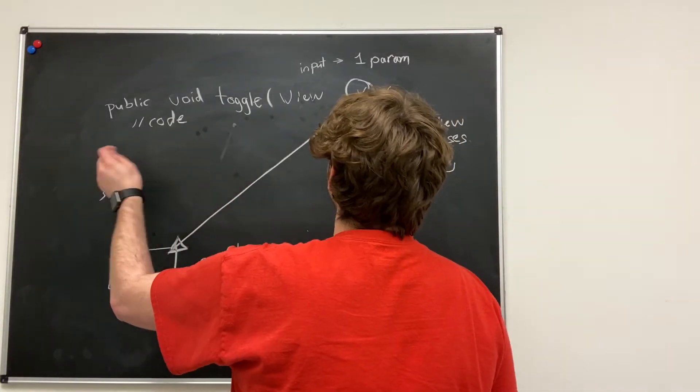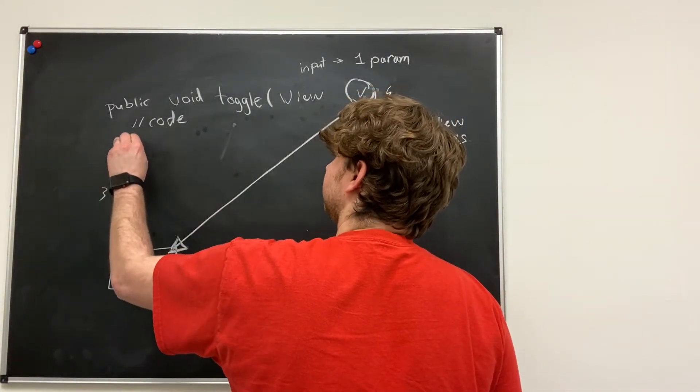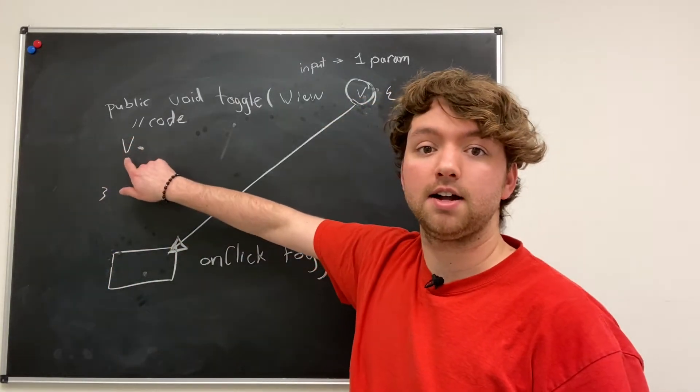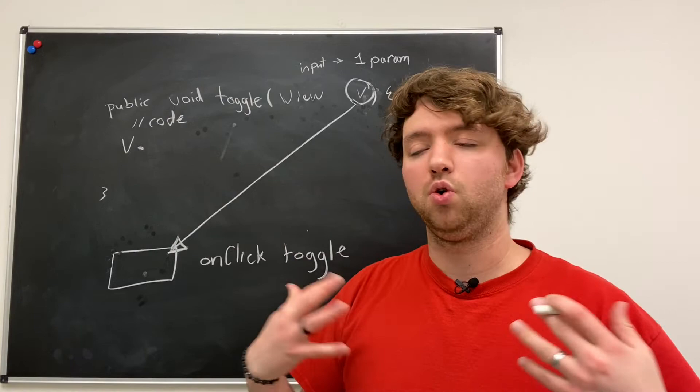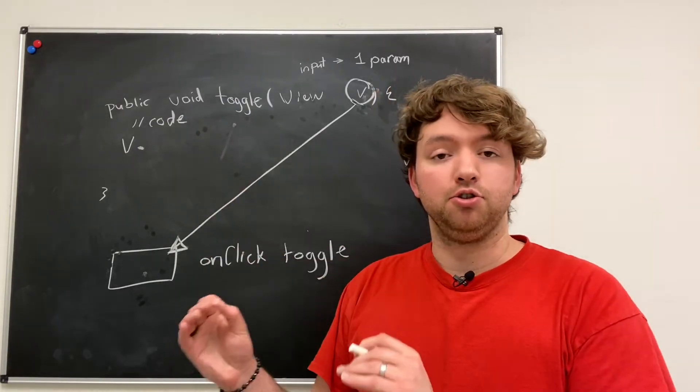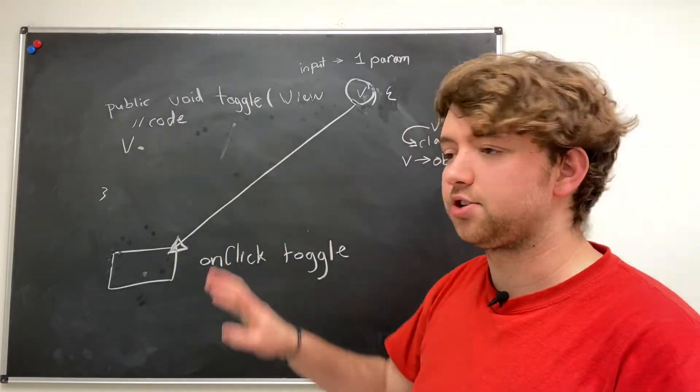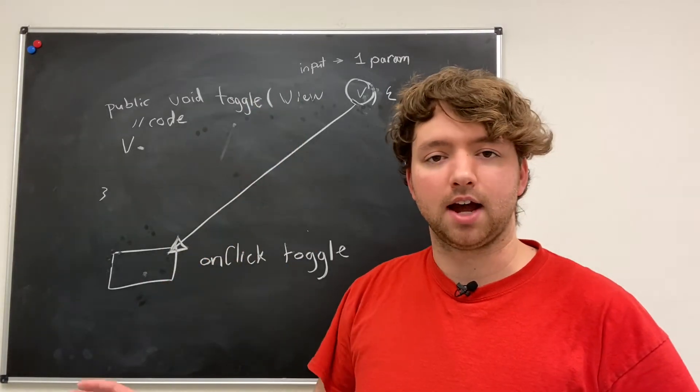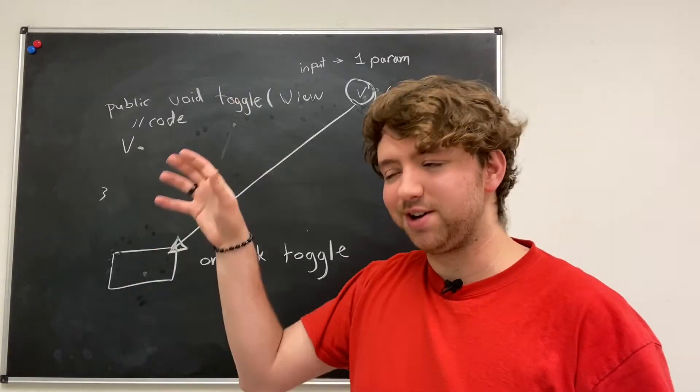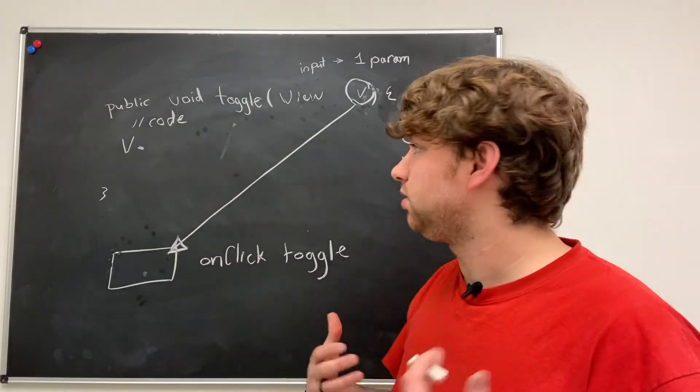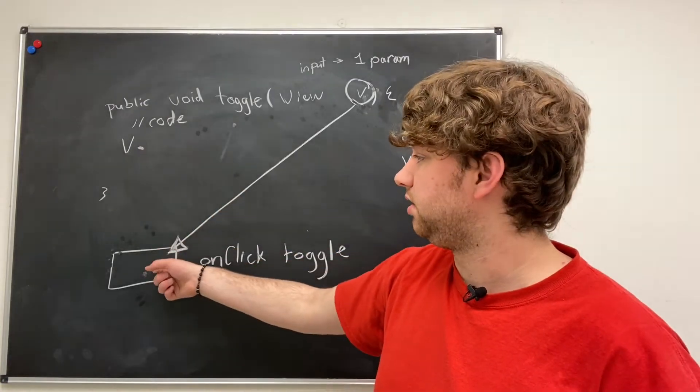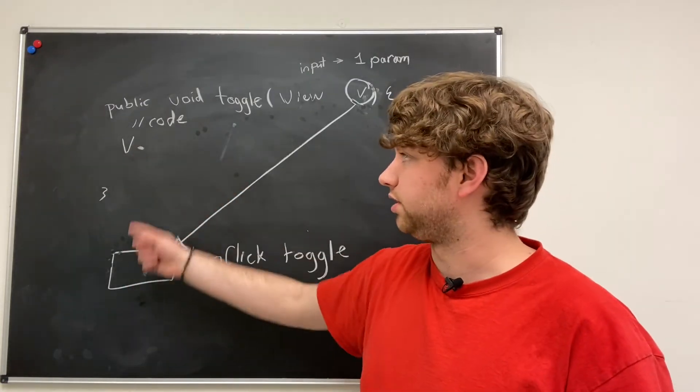So inside code, we can say something like V and then use dot notation. So V dot, and then we'll get access to a whole bunch of different things related to this button. So do you remember in the visual editor, all the attributes you can set on the right hand side there, well, you can access these through the object reference to this button, because this is now referring to this button here.